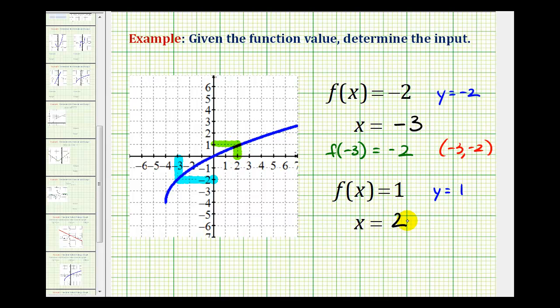So we have x equals two, which again means f of two equals one, which would correspond to the point with an x-coordinate of two, and a y-coordinate of one.